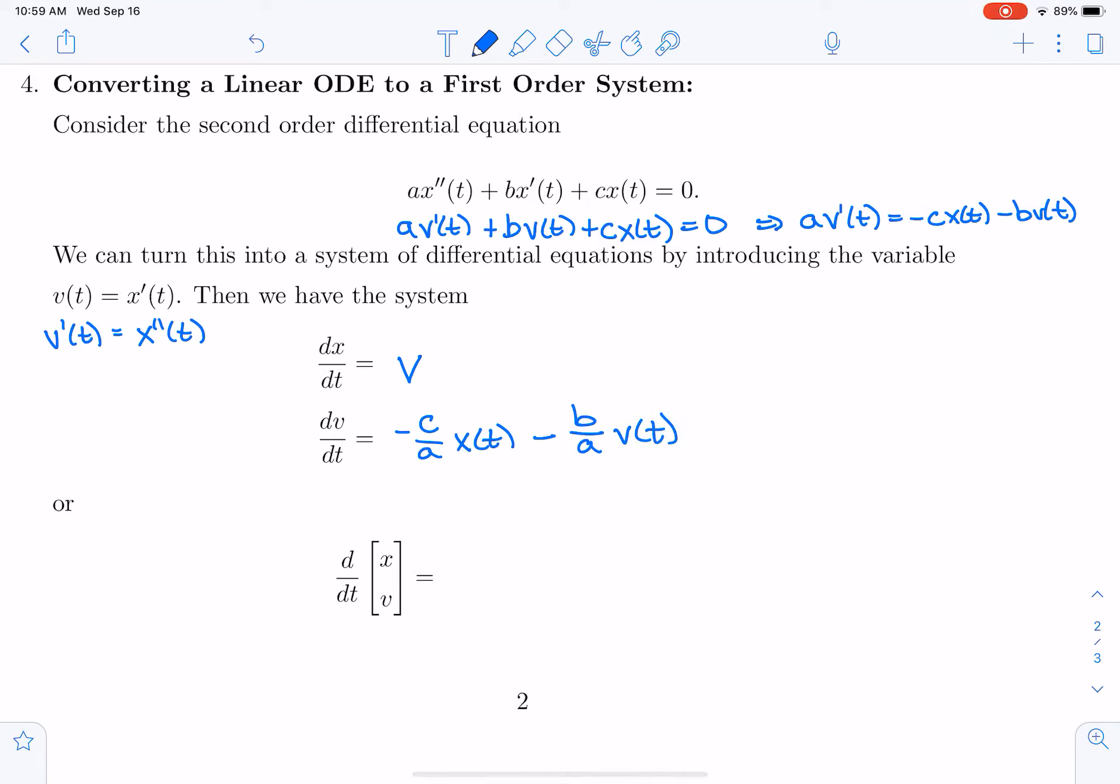Here I am assuming that A is not zero, but if A were zero, then we'd have a first order differential equation, not a second order differential equation. Okay, so now I have a system and the system is describing both position and velocity.